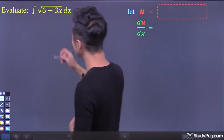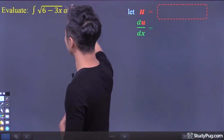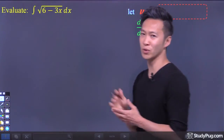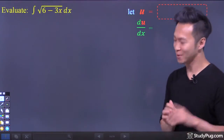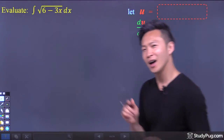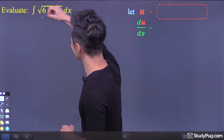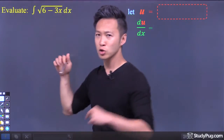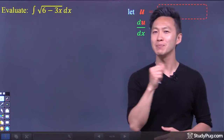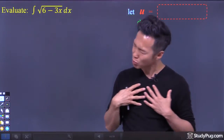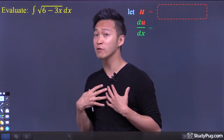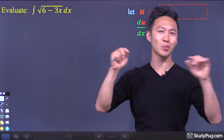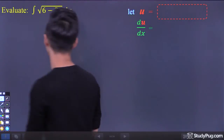We want to find the indefinite integral of this radical function, the square root of 6 minus 3x. First, let's convert this radical expression in the integrand to exponential form, simply because we are much more used to finding the anti-derivative of a function in exponential form.